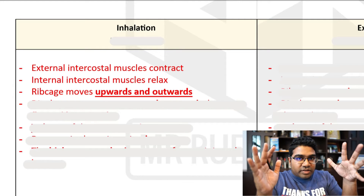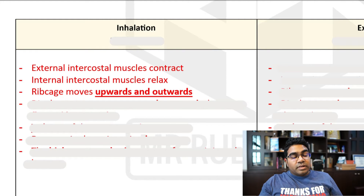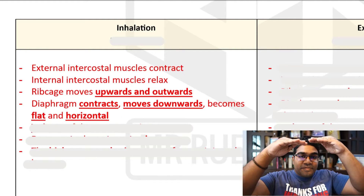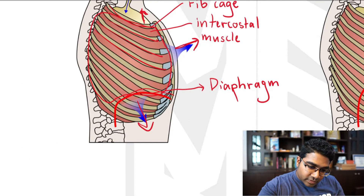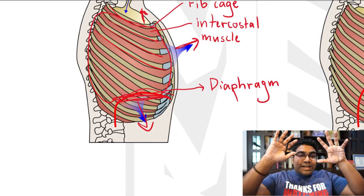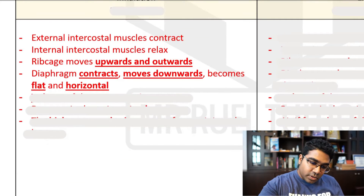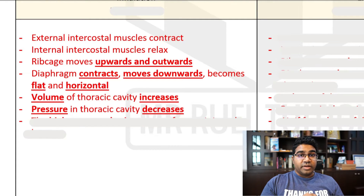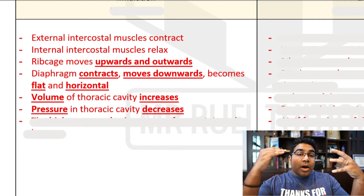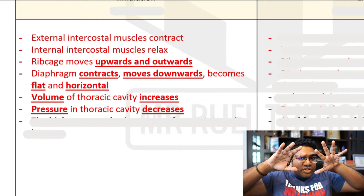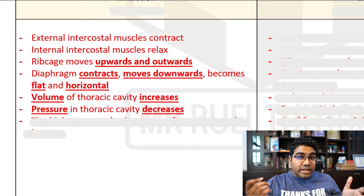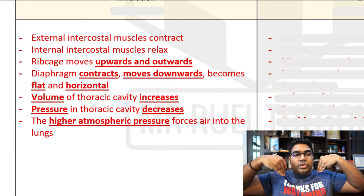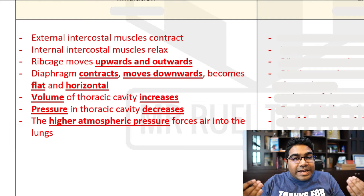Besides the ribcage, we also have the diaphragm muscle. The diaphragm contracts, moves down, and flattens. The overall effect is that the entire volume of the thoracic cavity is increased. When the volume increases, the air pressure in the thoracic cavity decreases. Relative to the atmosphere, the pressure inside is lower, so the higher atmospheric pressure spontaneously forces air into the lungs. We have inhaled air.